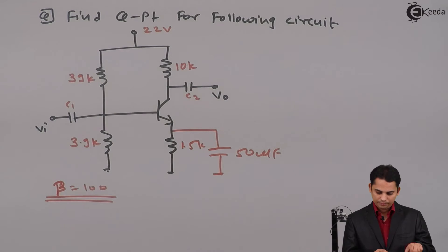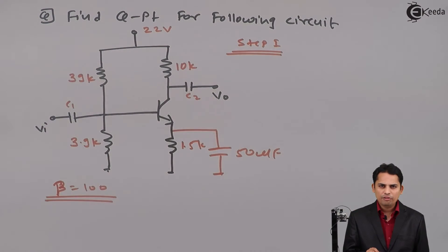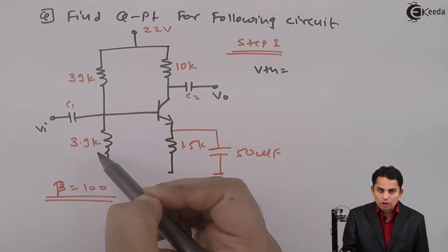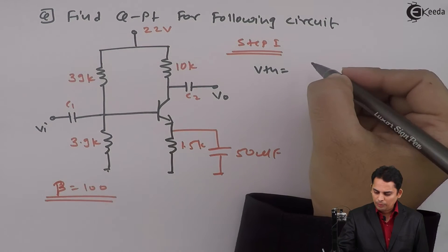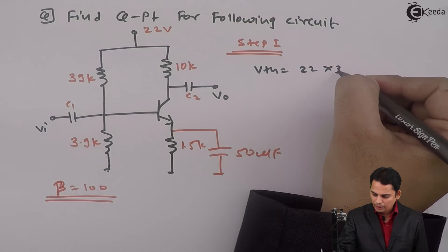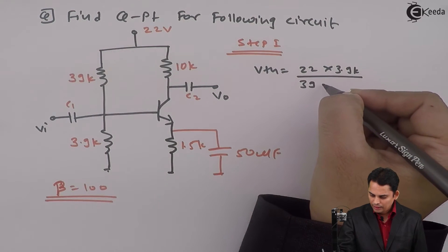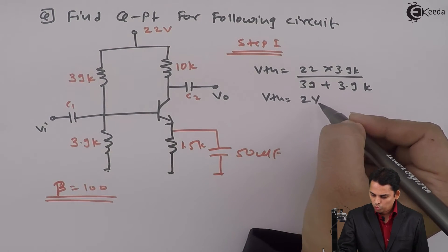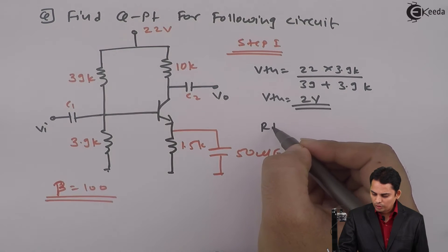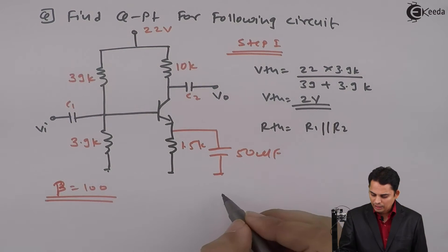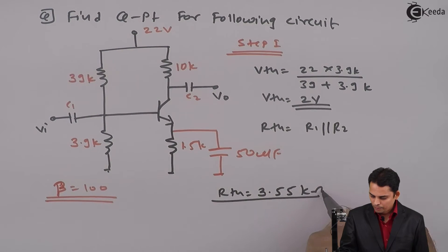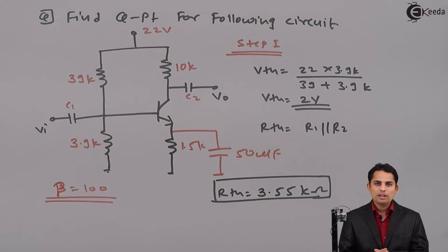So let's apply step 1. In step 1, we will first find out Thevenin's equivalent voltage VTH, which is given as VCC multiplied by R2 divided by R1 plus R2. The equation becomes 22 multiplied by 3.9K divided by 39K plus 3.9K. And RTH is equal to R1 in parallel with R2, where R1 is equal to 39K in parallel. From this step, we have got VTH and RTH.